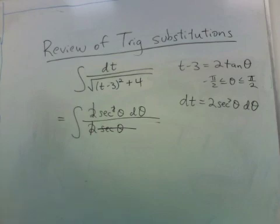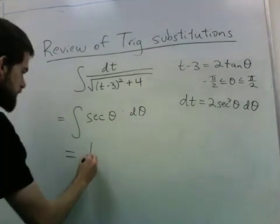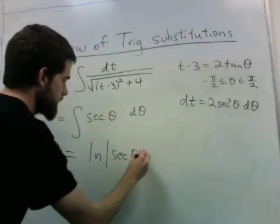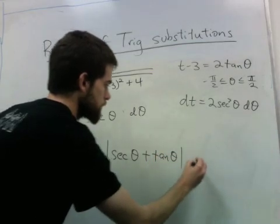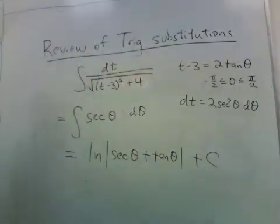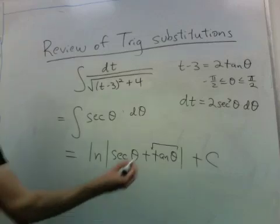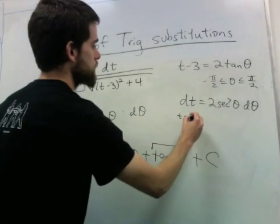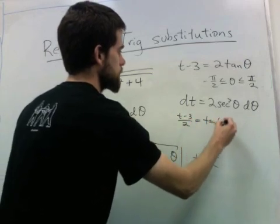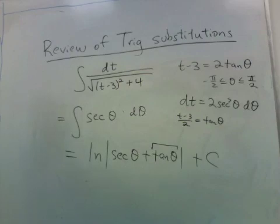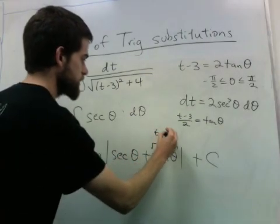So we just have a secant theta on top. And you may not remember this integral. It's actually natural log of secant theta plus tangent theta plus c. But we're not done yet because we have to make this just involving t in the end. So this part is not hard because if I divide by 2, I get t minus 3 over 2 is tangent theta. So this part is just t minus 3 over 2.